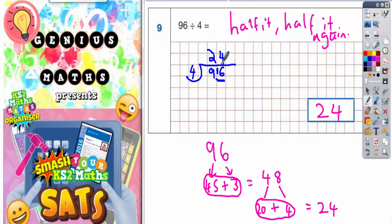And as you can see, if we do it using the bus shelter method, we get an answer of 24, which is exactly the same as what we got if we halved the 96 and then halved it again.